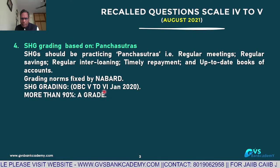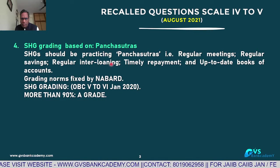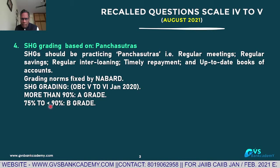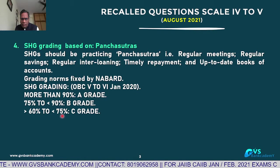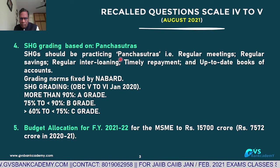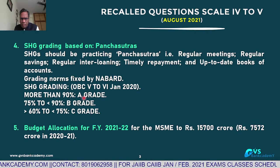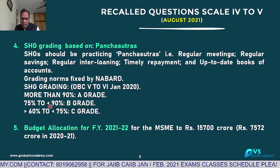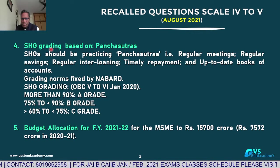SHG grading: more than 90 marks is A grade, 75 to 90% is B grade, 60 to 75% is C grade. The minimum grade required for getting a bank loan for an SHG is at least C grade. So: A above 90, B 75–90, C 60–75. These are the SHG grading principles.